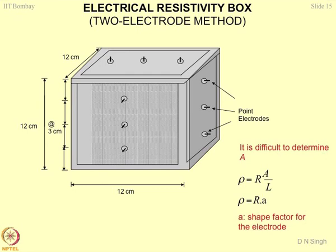With point electrodes, it is very difficult to define the area of cross-section because the area of a point tends to zero. So instead, in the equation ρ = R · A/L, the term A/L is replaced by a small coefficient shape factor 'a'. To find this factor, you fill the box with a liquid of known resistivity, measure the resistance across the two electrodes, and obtain parameter 'a'. This is how you calibrate the box.